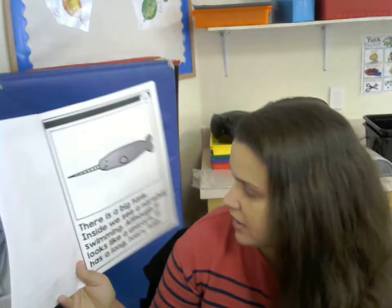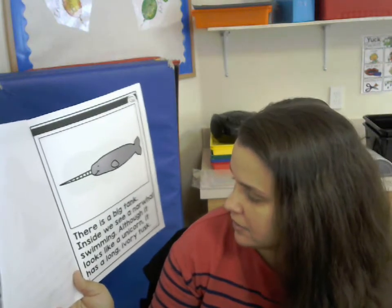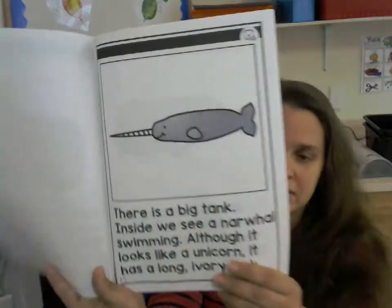Let's see what's next. There is a big tank. Inside we see a narwhal swimming. Although it looks like a unicorn it has a long ivory tusk.